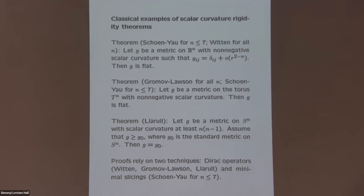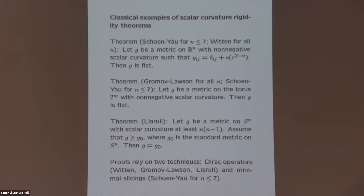The first landmark result is the positive mass theorem — here stated as a special case. We look at a metric g on Euclidean space with non-negative scalar curvature, and assume that near infinity the metric is Euclidean up to error terms falling off faster than r to the 2 minus n, with appropriate decay conditions on the derivatives. Under that condition, the metric is actually flat — completely rigid. This was proved by Schoen and Yau initially in dimension 3 using minimal hypersurfaces, then extended up to dimension 7, and there's a completely different proof by Witten which works in all dimensions.